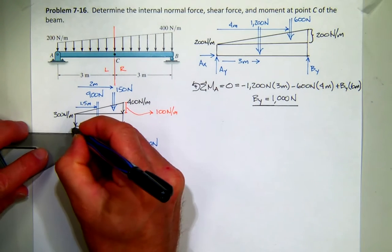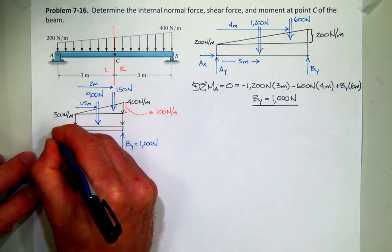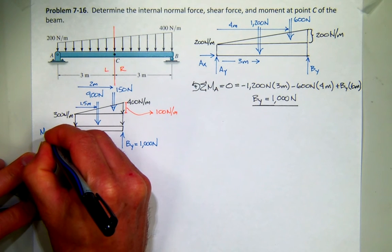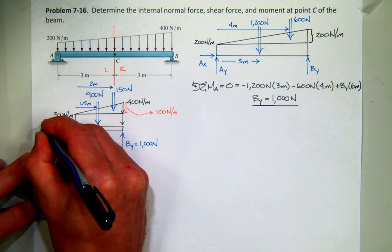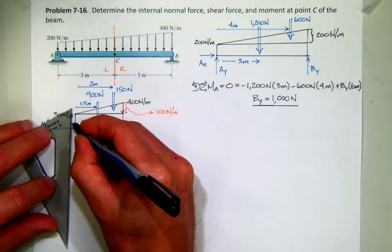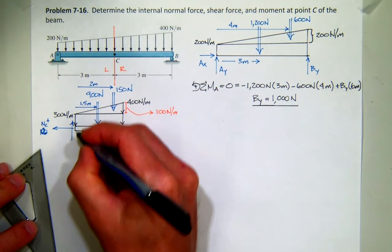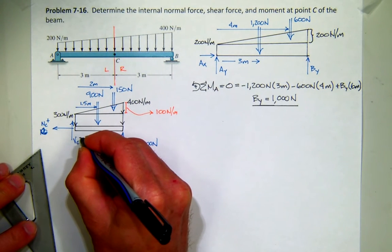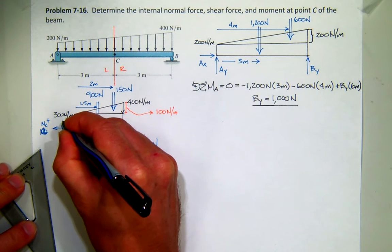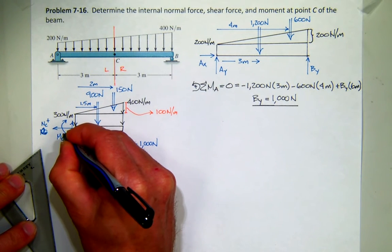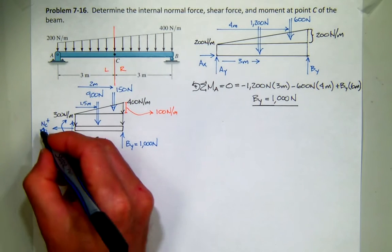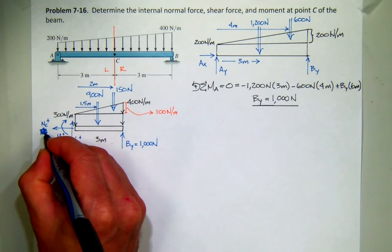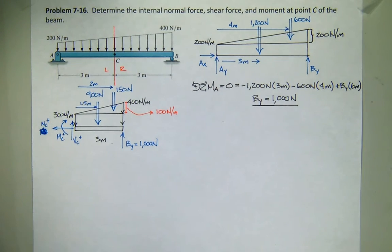Now let's not forget that at my cut surface, I have my normal force. I have my shear force. I have my bending moment, all positive. So again, pretty crowded free-body diagram. But from that, I should be able to find my internal forces.